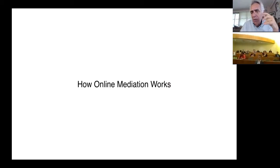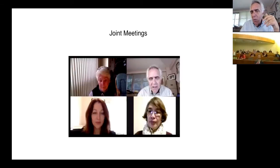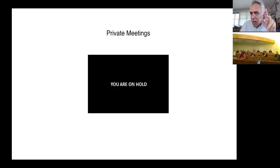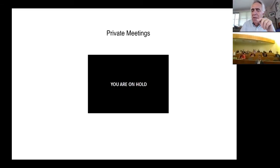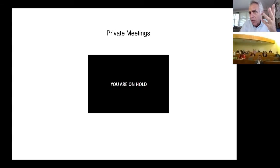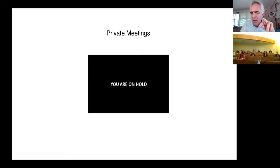How online mediation works: we can have joint meetings with all parties. With a click of a mouse, we can also have private meetings. For example, I might say to party number two, 'I'm going to have a private chat with party number one, so I'm going to put you on hold for 10 minutes. While you're on hold, think about something, write something down, or have a cup of coffee. I'll get back to you in 10 minutes.' So with a click of a mouse, we can switch between joint meetings and private meetings.